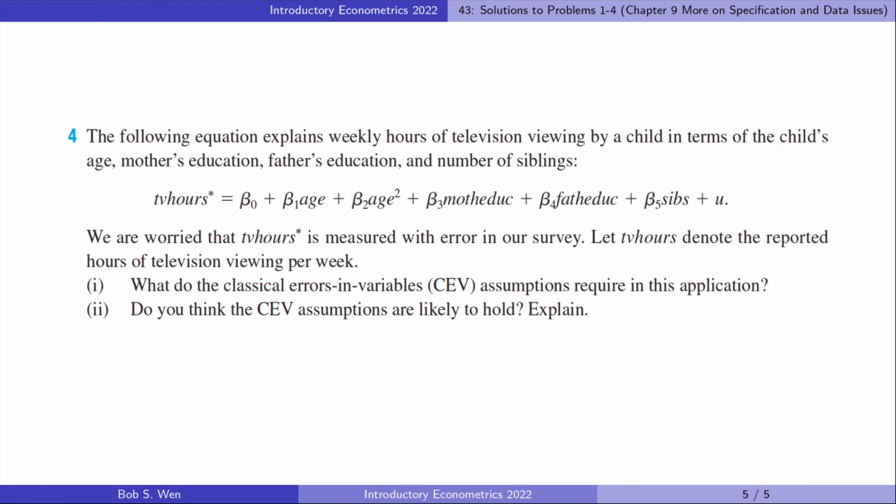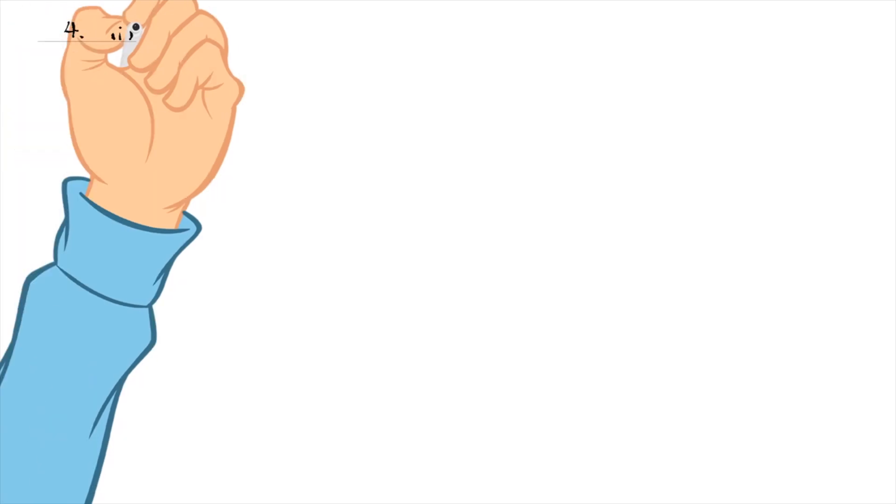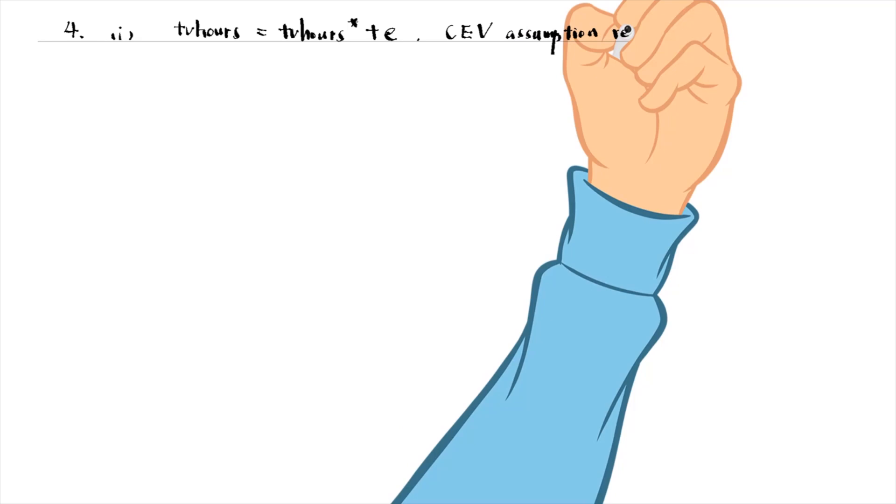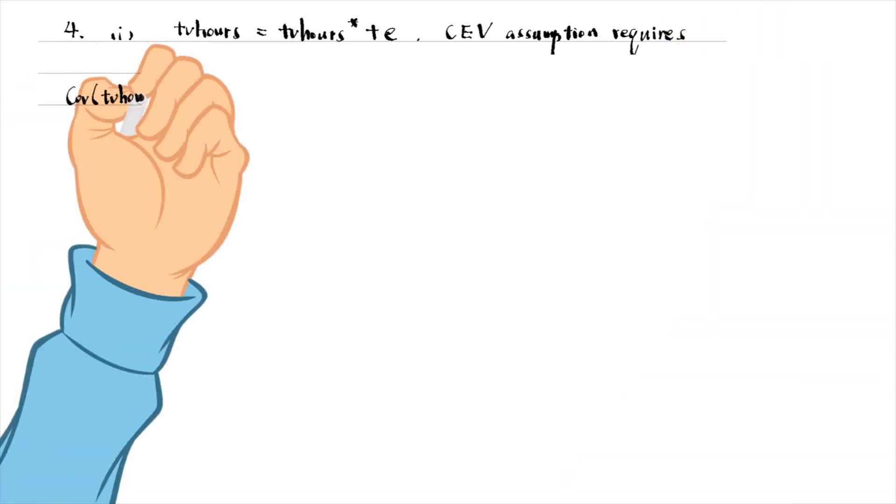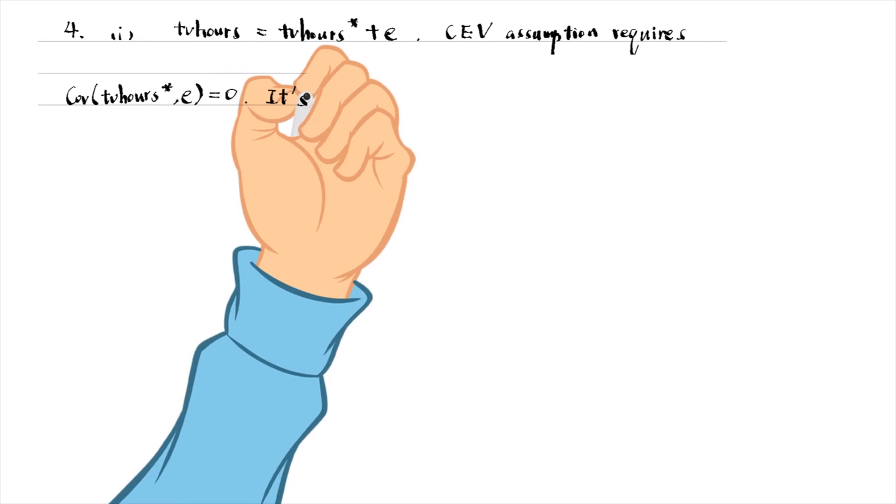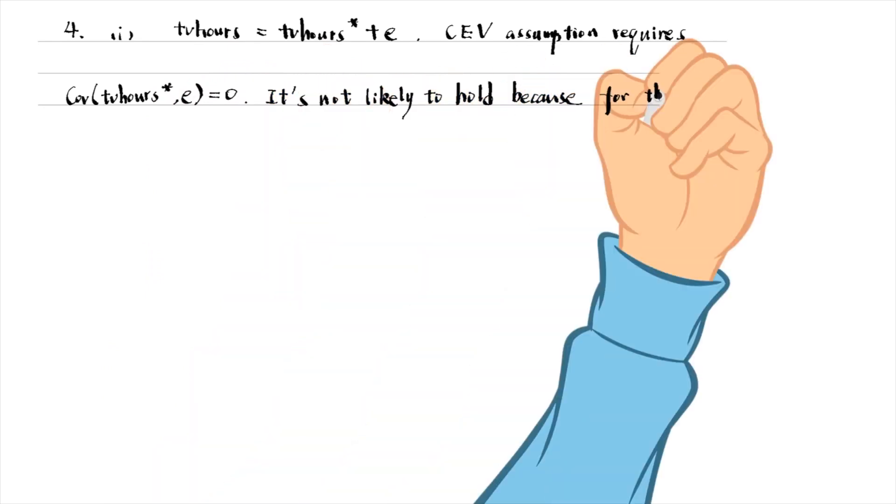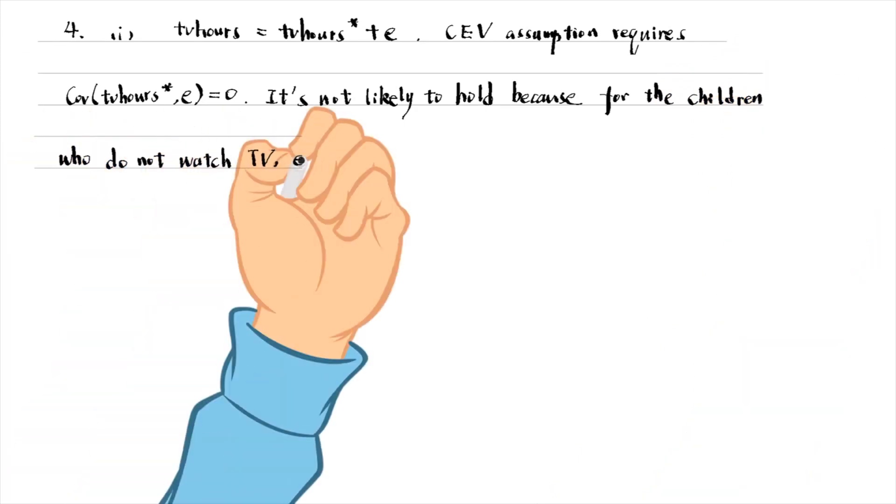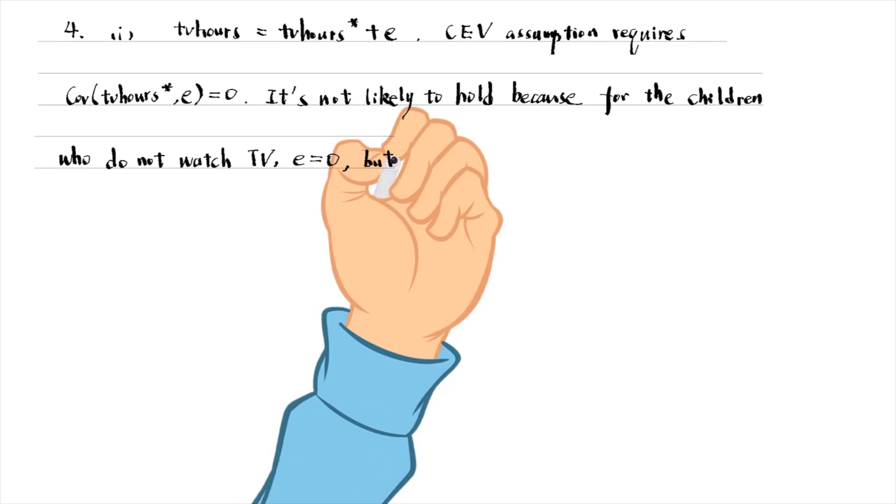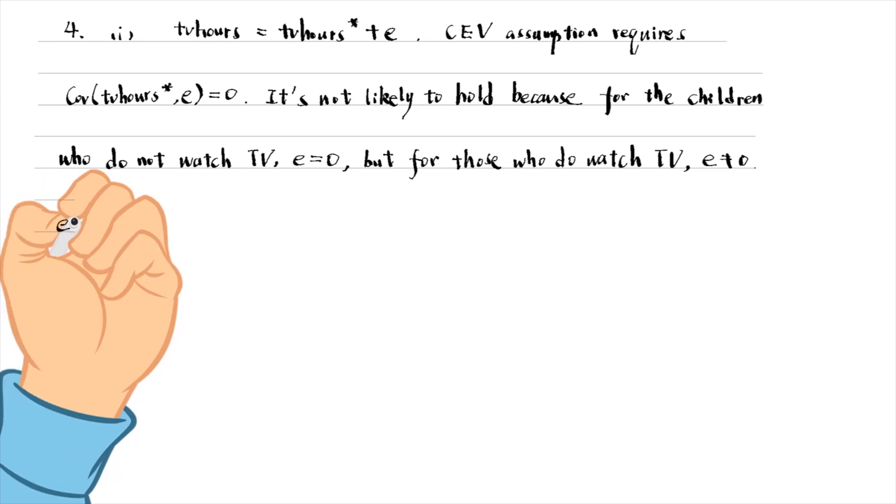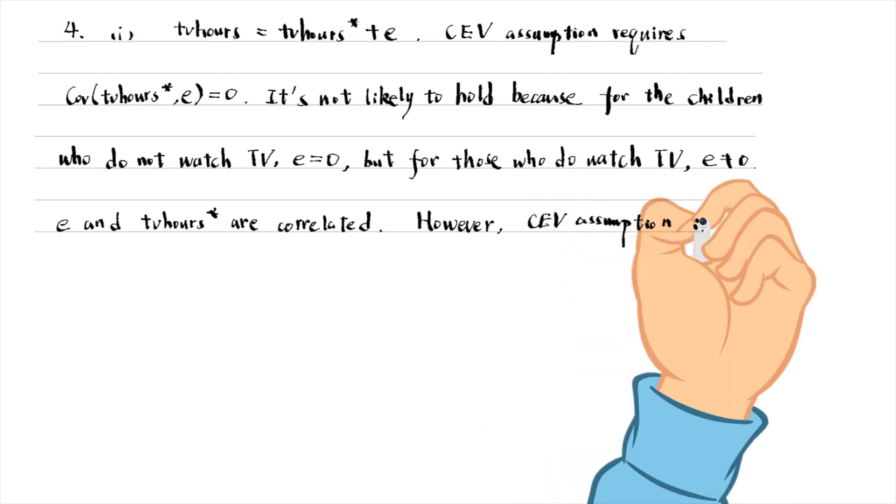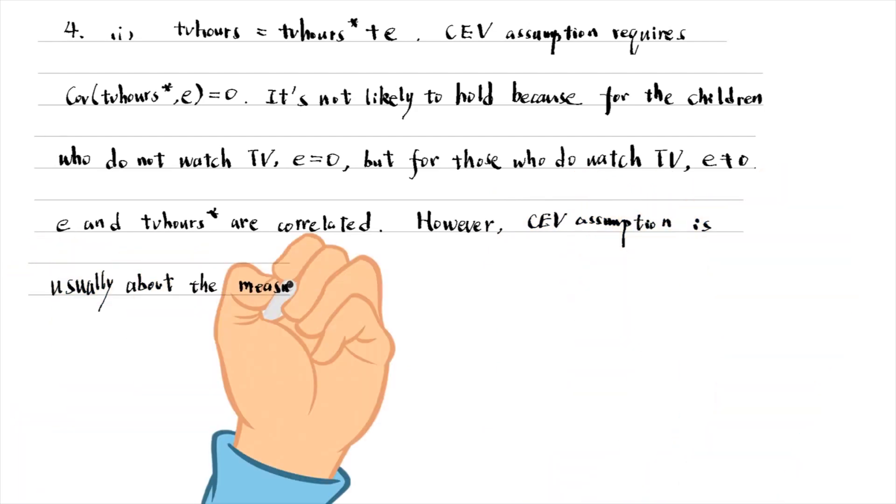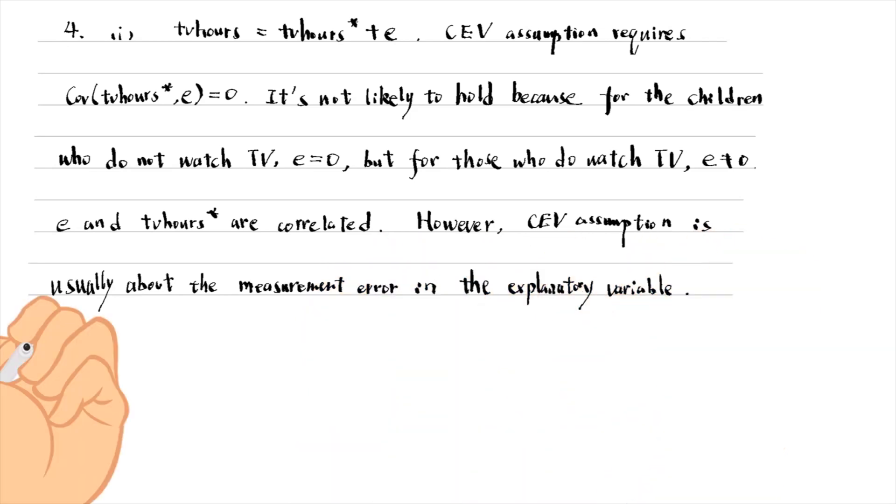Let's do problem 4. We write the observed hours equal to the actual hours plus the measurement error. The classical errors-in-variables assumption is that the measurement error is uncorrelated with the true, unobserved variable. It is not likely to hold because for the children who do not watch TV, the measurement error is very likely to be zero. But for those who do watch TV, the measurement error is not zero. The measurement error and the actual hours are correlated. However, the classical errors-in-variables assumption is usually about the measurement error in the explanatory variables. For the measurement error in the outcome variable, as in this problem, we are concerned about whether the measurement error is correlated with all the explanatory variables in the model.